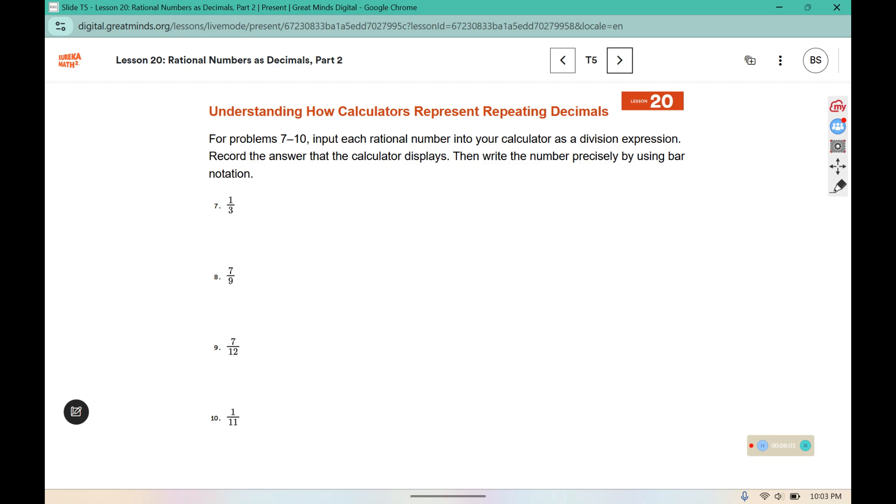For problems 7 through 10, input each rational number into your calculator as a division expression. Record the answer that the calculator displays, then write the number precisely by using the bar notation. So on your calculator you're going to type in 1 divided by 3, 7 divided by 9, 7 divided by 12, and 1 divided by 11. Your calculator doesn't have an endless display. So it might repeat, and then it might round up at the end because it's run out of room. But that doesn't mean that it doesn't continue to repeat. It's just your way of the calculator showing that it has to round up at the end because it's run out of space. So it can't continue to repeat forever on the display. However, the decimal does continue to repeat. So mine displays for 1 divided by 3, 0.333333, but with the bar notation it should look like this. The 3 is the repeating piece.